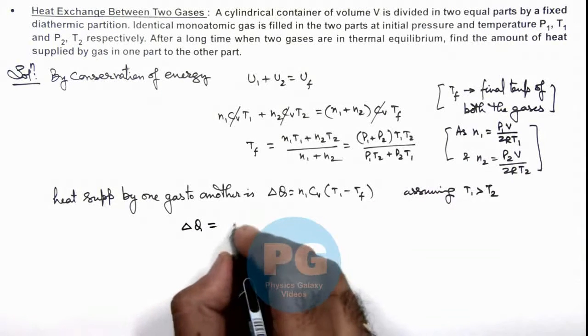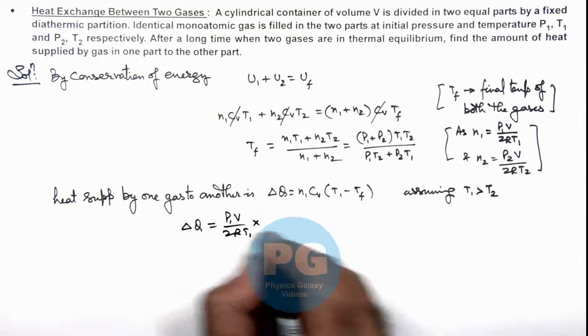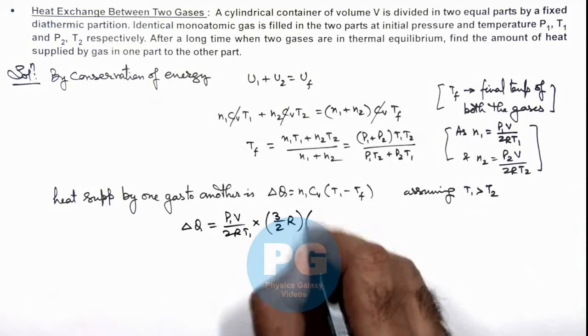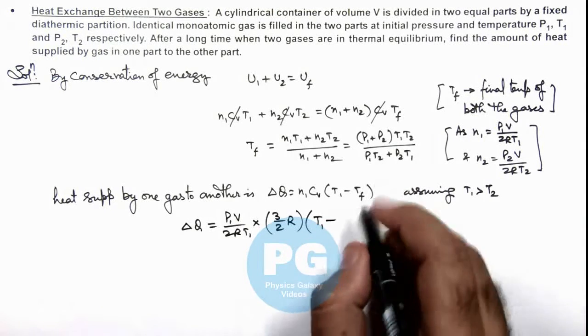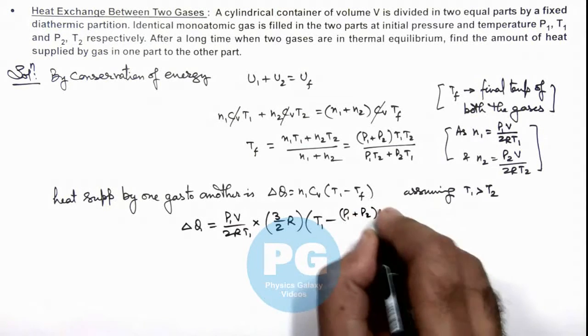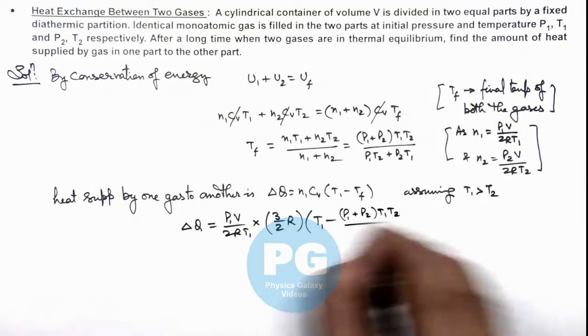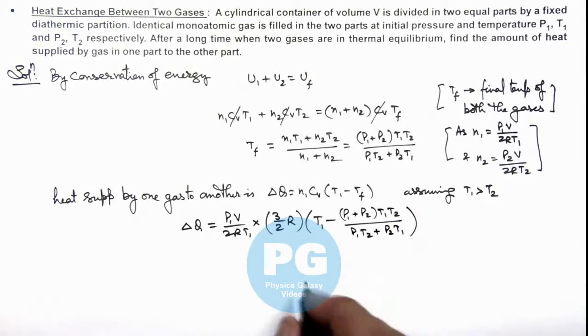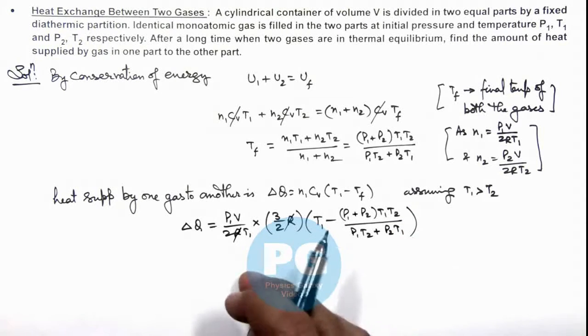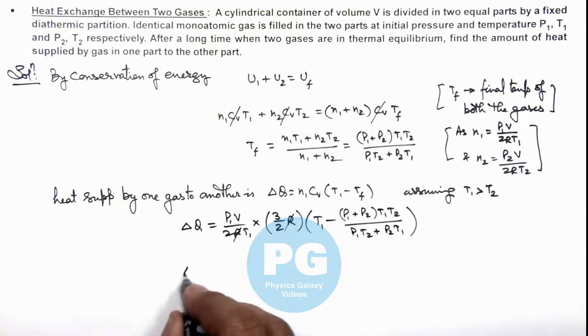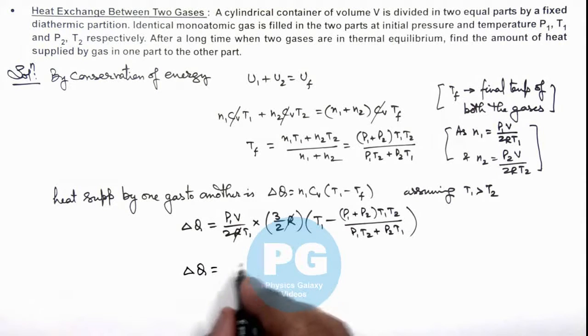On substituting the values, this gives ΔQ = (P₁V)/(2RT₁) multiplied by Cᵥ, for monoatomic gas we can write 3/2 R, multiplied by T₁ minus T_f. We have (P₁ + P₂)T₁T₂/(P₁T₂ + P₂T₁). Here this R gets cancelled out, and when you simplify this relation,